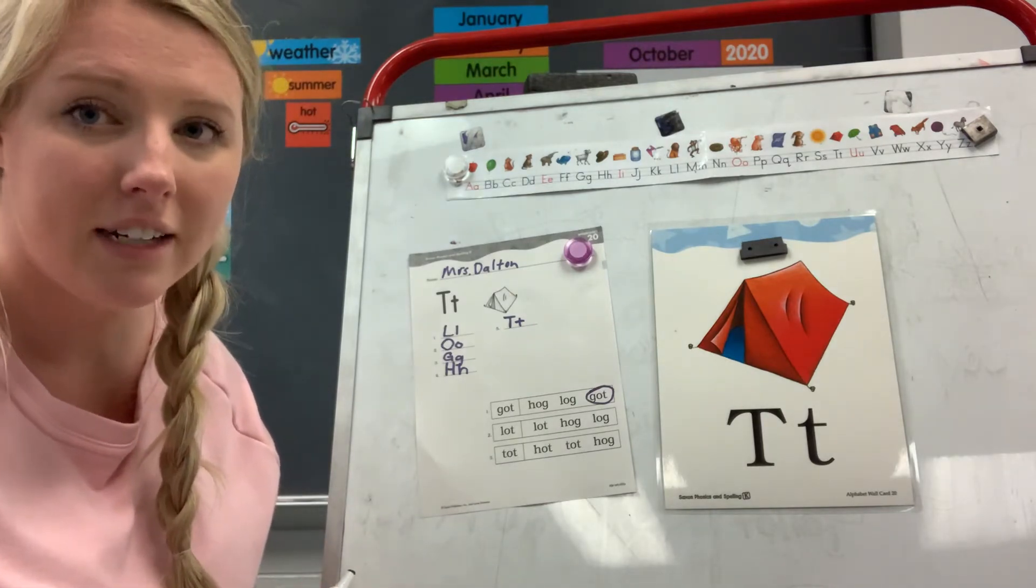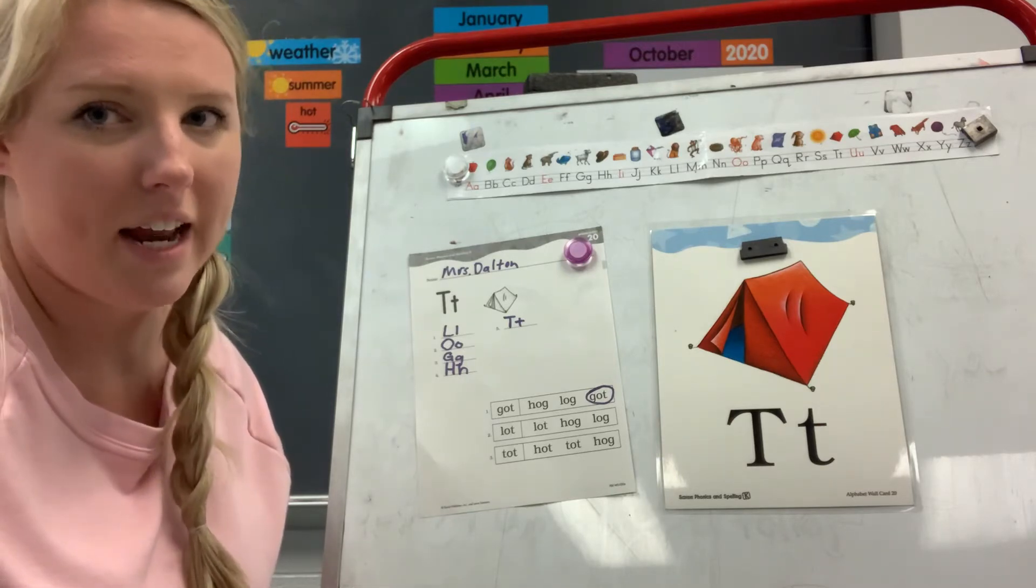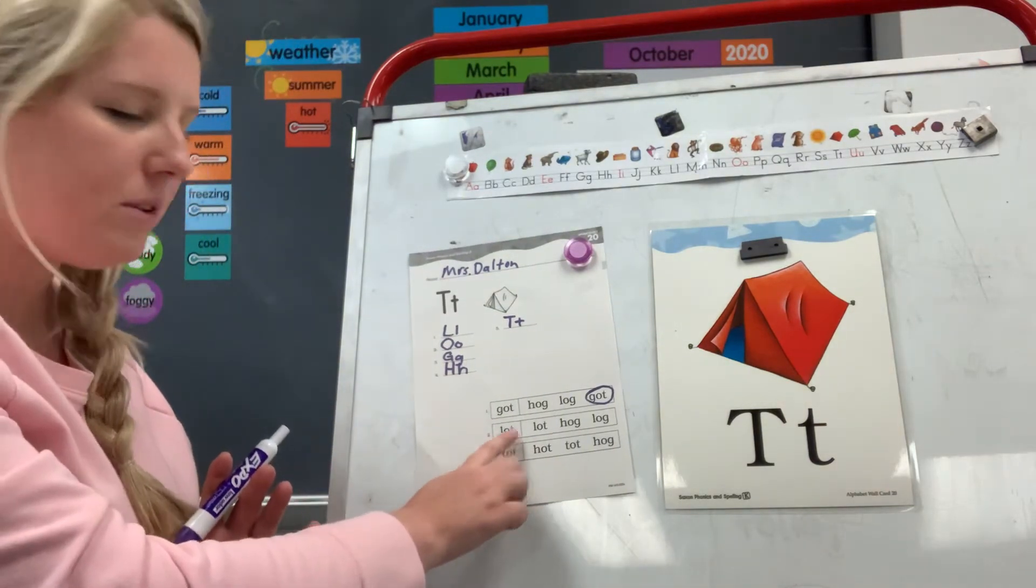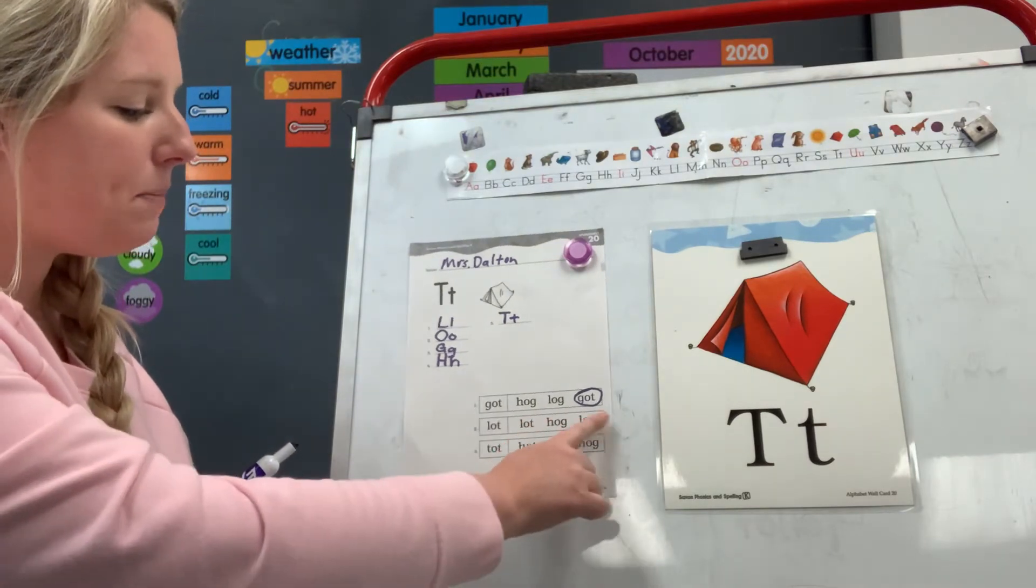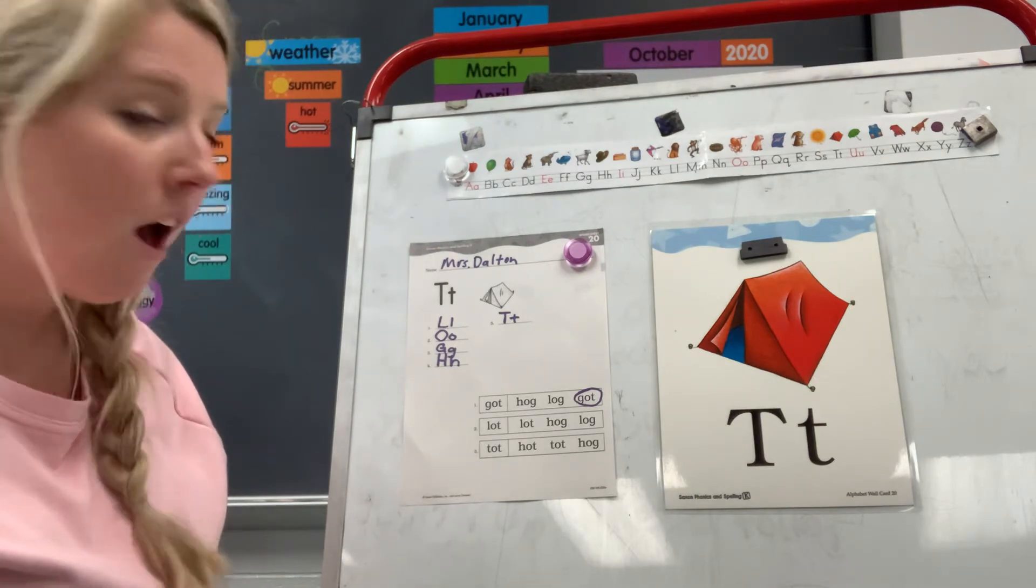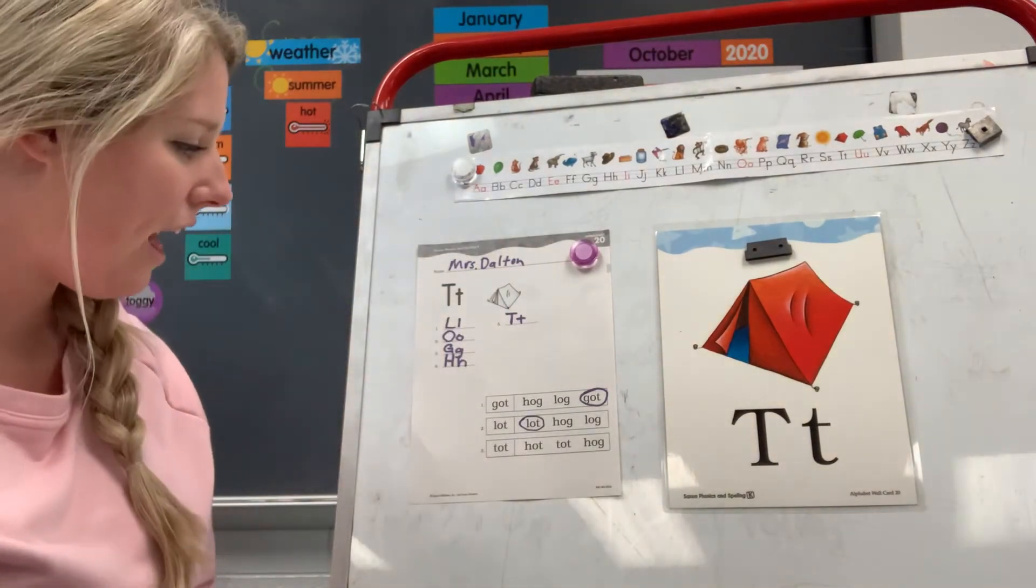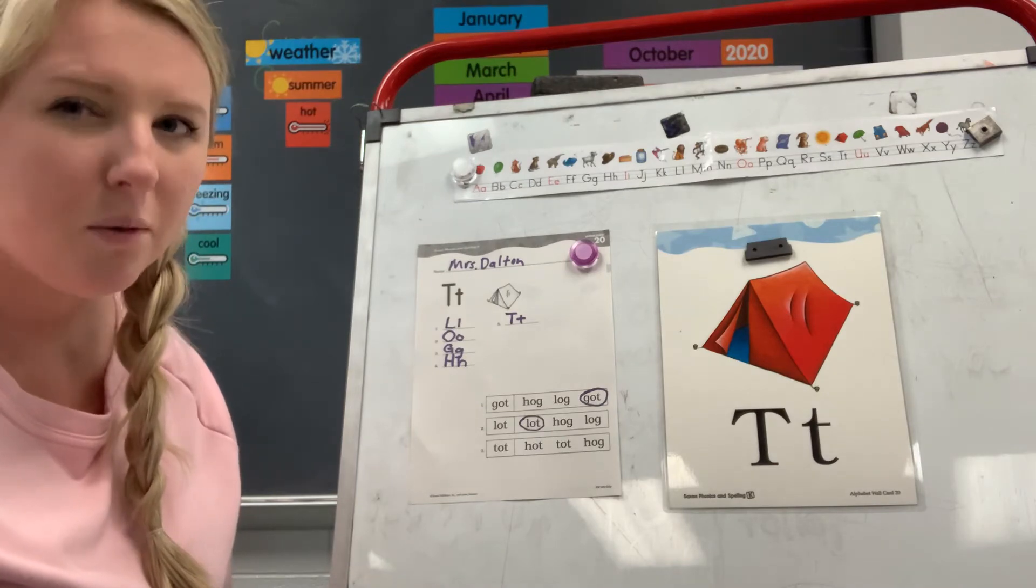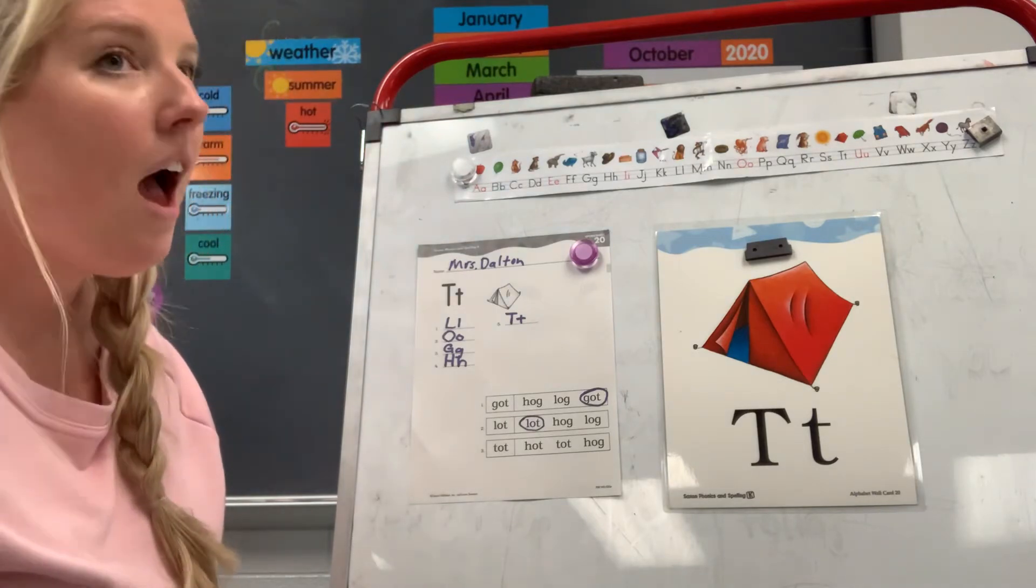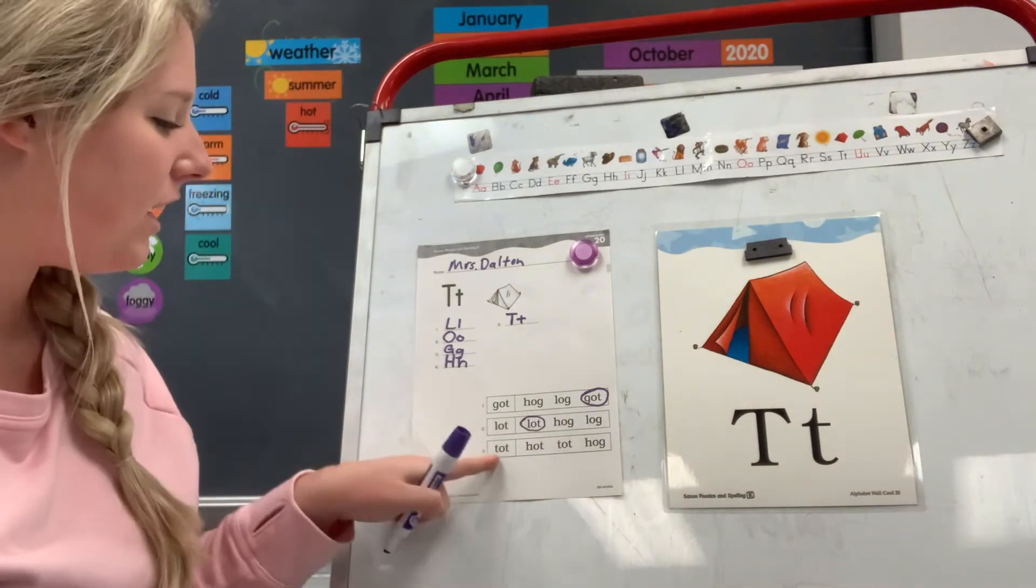All right, look at number two. You see the letters L-O-T, right? Can you look at these three words beside it and find the letters L-O-T again? It's right beside it. Good job. Okay, we're gonna circle it. L-O-T, L-O-T. What's the word? Lot. Good. Lot, like I had a lot to eat for breakfast today. Good.